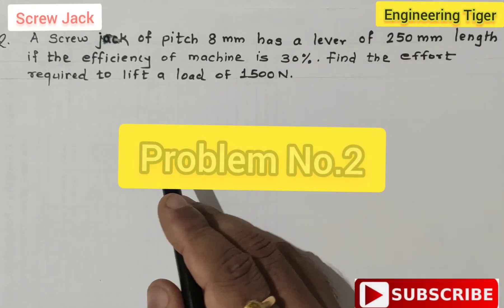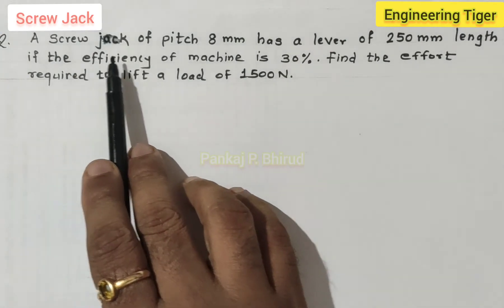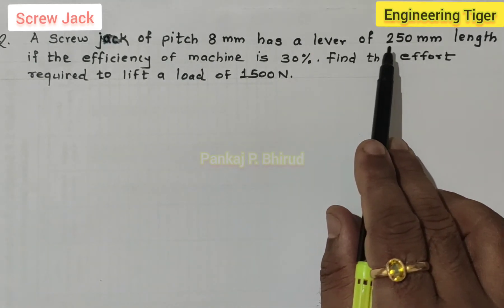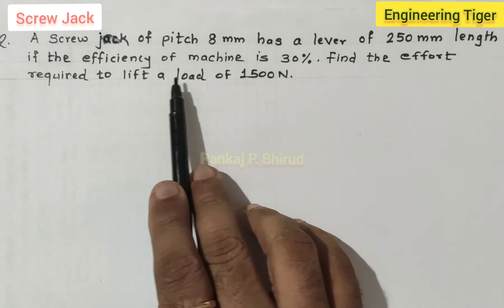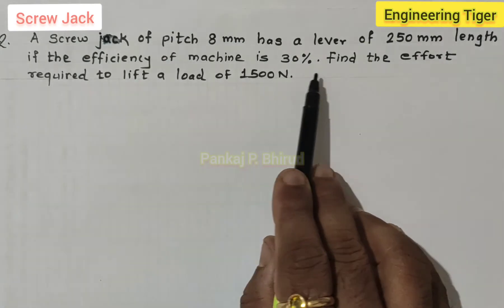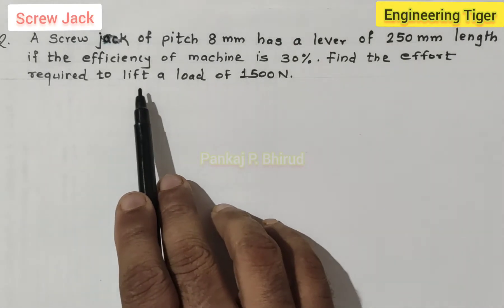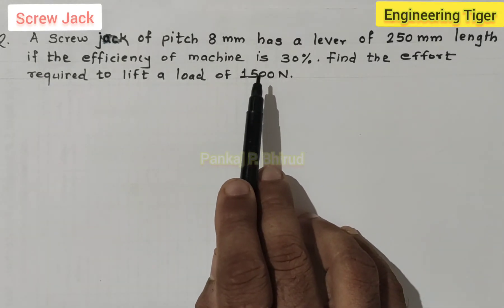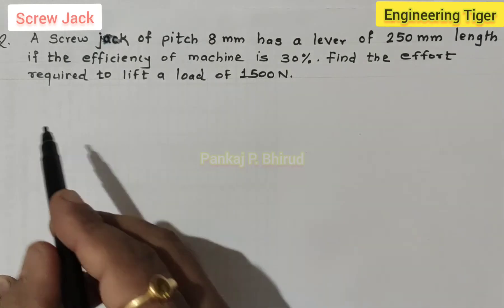Let us take the second example of screw jack. A screw jack of pitch 8 mm has a lever of 250 mm length. If the efficiency of the machine is 30 percent, find the effort required to lift a load of 1500 Newton. First write down the given data.